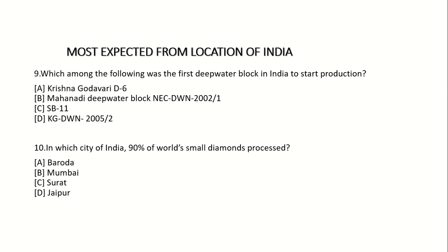Ninth question: Which among the following was the first deepwater block in India to start production? Option A: Krishna Godavari D6. Option B: Mahanadi deepwater block NEC DWN 2002/1. Option C: SB11. Option D: KG DWN 2005/2. Answer: Option A — Krishna Godavari D6.